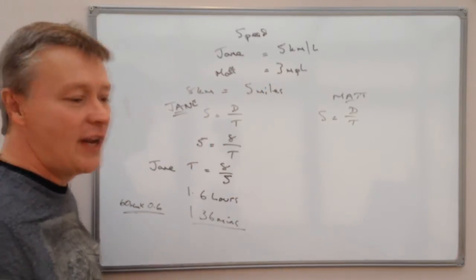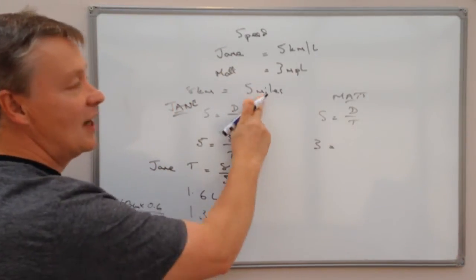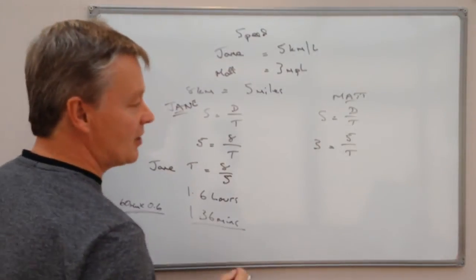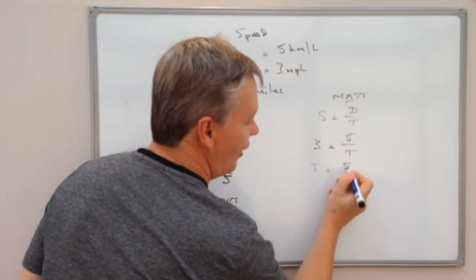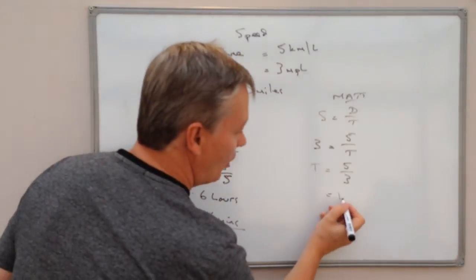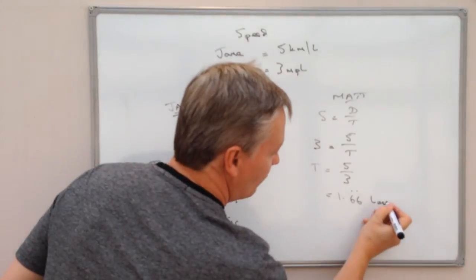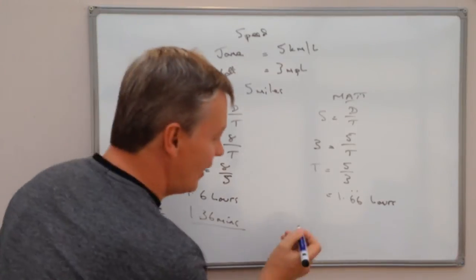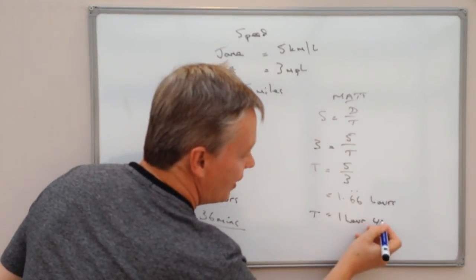Matt walks at a speed of 3 miles per hour, and he's walking a distance of 5 miles. So we have 3 equals 5 divided by T. Using algebraic manipulation, T equals 5 over 3. If I divide 5 by 3, I get 1.66 recurring hours. Multiplying 0.66 by 60 minutes gives a time for Matt of 1 hour and 40 minutes.